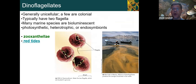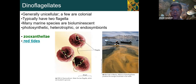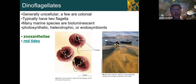Dinoflagellates come in a variety of types. We already know that some of these live inside corals and certain other types of marine creatures as symbionts. A number of the ones in the plankton will produce light — they're bioluminescent. If you see waves kind of glowing at night on the ocean, there's a good chance it's due to dinoflagellates in the water. Most dinoflagellates are able to capture sunlight energy, but also some primarily do one or the other. Some dinoflagellates are able to produce toxins, and so they are the main culprits in red tides, for example.